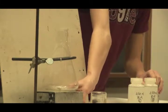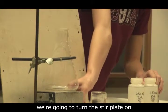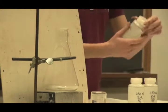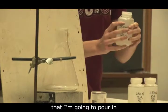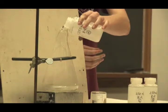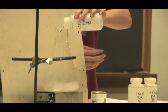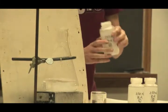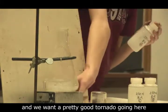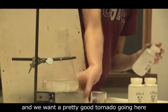To start off, we're going to turn the stir plate on, and I have about 250 milliliters of Solution A that I'm going to pour in. We'll put that in first, and we want a pretty good tornado going here with the stir.